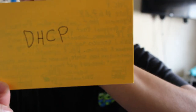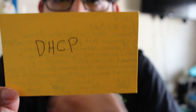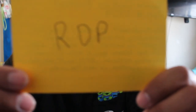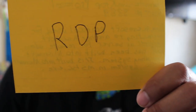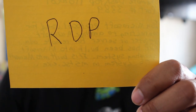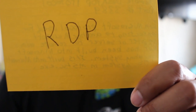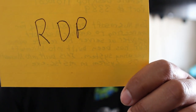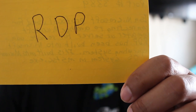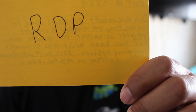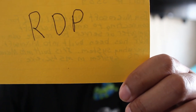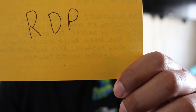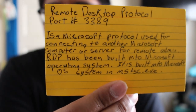Up next is RDP — Remote Desktop Protocol. Its port number is 3389. It is a Microsoft protocol used for connecting to another Microsoft computer or server for remote administration. RDP has been built into Microsoft OS and can be launched via mstsc.exe.